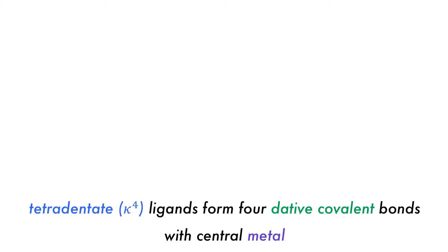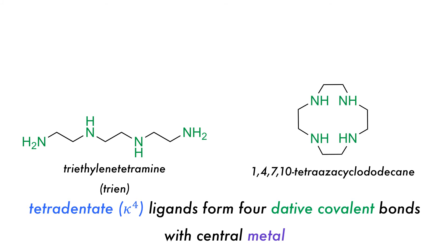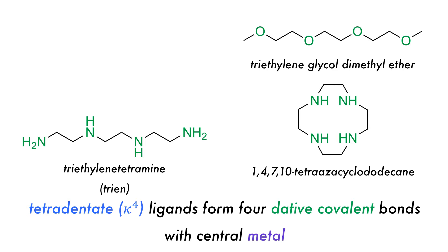Tetradentate ligands form four dative covalent bonds with the central atom and are typified by triethylene tetraamine, 1,4,7,10-tetraaza-cyclododecane, triethylene glycol dimethyl ether, and the crown ether 12-crown-4, among others.